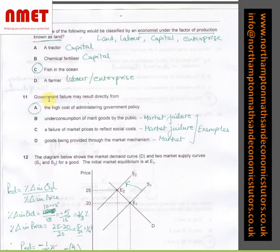In question number 11, government failure may result directly from, and I have again used process of elimination where I've said A is the answer, the high cost of administering government policy, which is one of the features of government failure. However, I've said B, C, D are all examples of market failures.